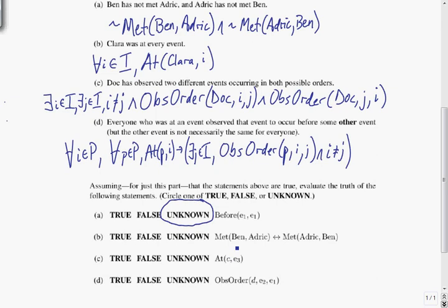Our next one is Met(Ben, Odrick) if and only if Met(Odrick, Ben). This is a biconditional, so it's only going to be true if both sides are true or both sides are false. So if both or neither are true. And we've already stated that Ben has not met Odrick, and Odrick has not met Ben, so we know both sides of this are false. This is false if and only if false, and that is true according to the truth table of a biconditional. So this statement we know to be true.